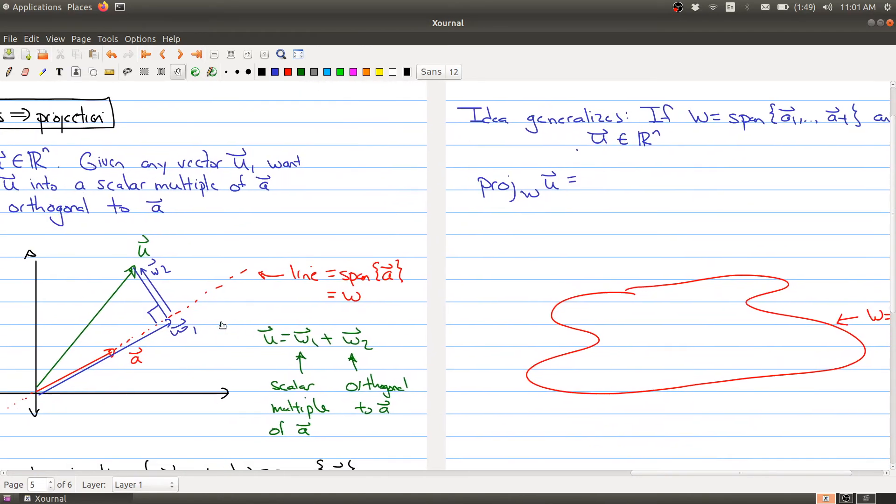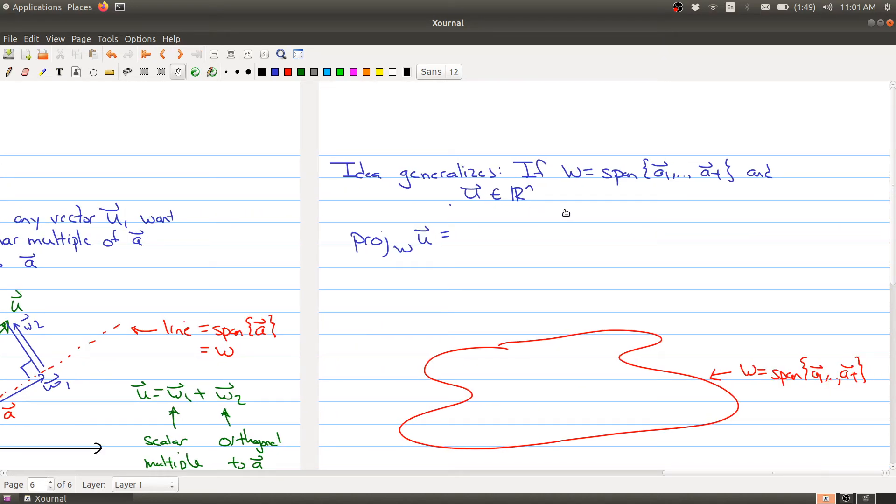Suppose that instead of having just one vector in w, there is a whole bunch of vectors that form a basis of w. And now you take some sort of vector in rn. Then the projection, when we write the projection of w of u, is the projection of u onto w. Let me give you an example that will illustrate what we're doing.